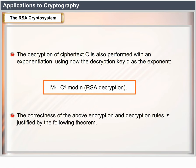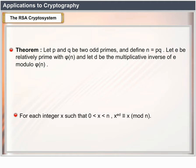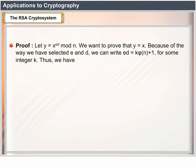The correctness of the RSA encryption and decryption rules is justified by the following theorem. Let P and Q be two odd primes and define N = PQ. Let E be relatively prime with φ(N) and let D be the multiplicative inverse of E modulo φ(N). For each integer X such that 0 ≤ X < N, X^(ED) ≡ X mod N. Proof: let Y = X^(ED) mod N. We want to prove Y = X. Because of the way we selected E and D, we can write ED = k·φ(N) + 1 for some integer k. Thus Y = X^(k·φ(N)+1) mod N.